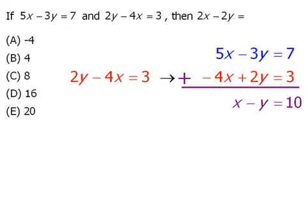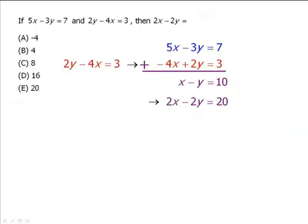Notice that our question asks us to find the value of 2x minus 2y, and so far we know the value of x minus y. If we multiply both sides of our equation by 2, we get 2x minus 2y equals 20. So we see here that our answer must be e.